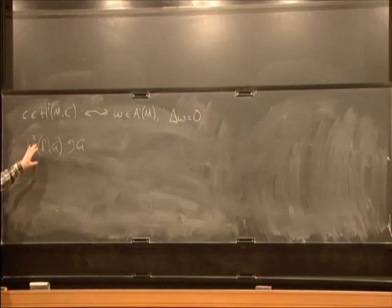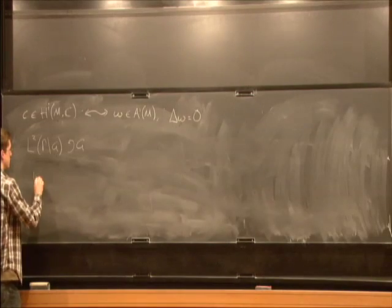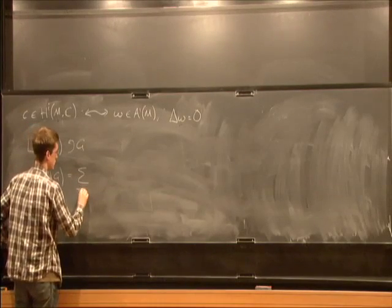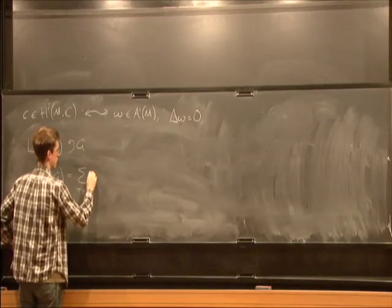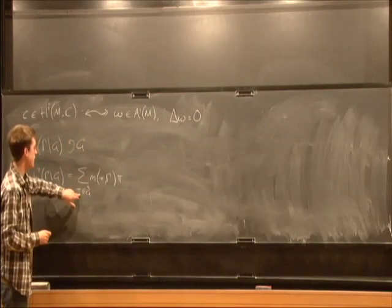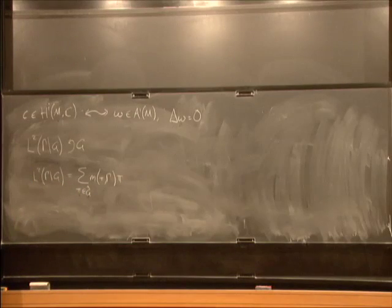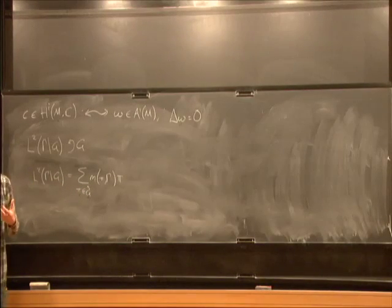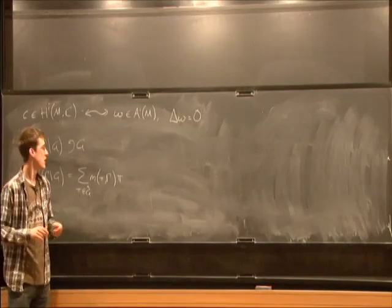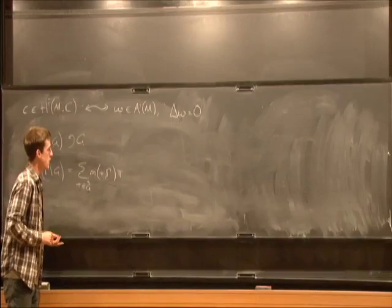G acts on gamma mod G from the right. Because G was semi-simple, it preserves the Haar measure on the space. So we get a unitary representation of G on L^2 gamma mod G. If we assume that M was compact, then as a consequence this representation decomposes as an irreducible direct sum of elements in the unitary dual of G. G hat is the unitary dual, the set of isomorphism classes of irreducible unitary representations of G, occurring with some multiplicity N_gamma_pi.